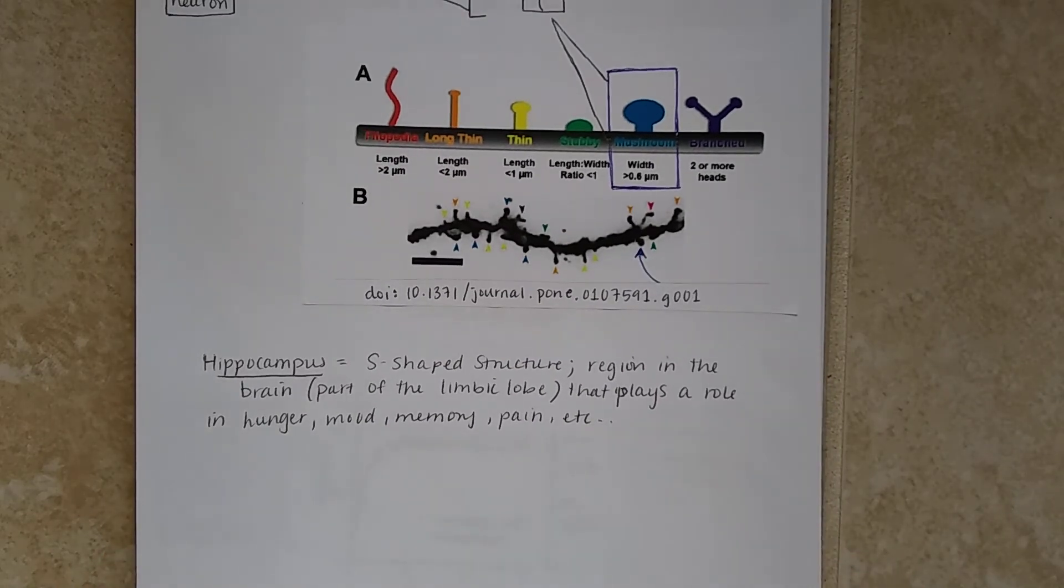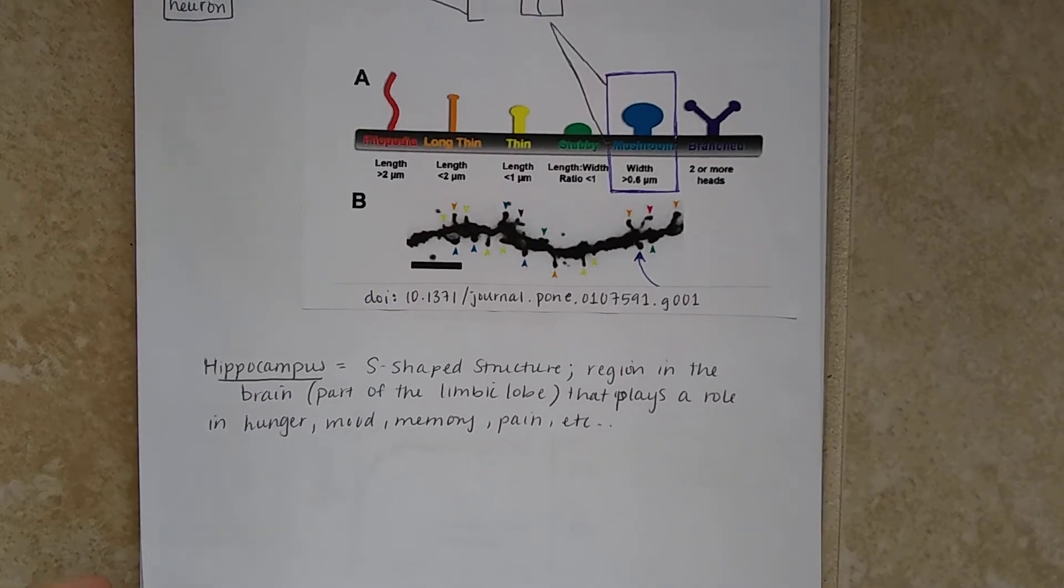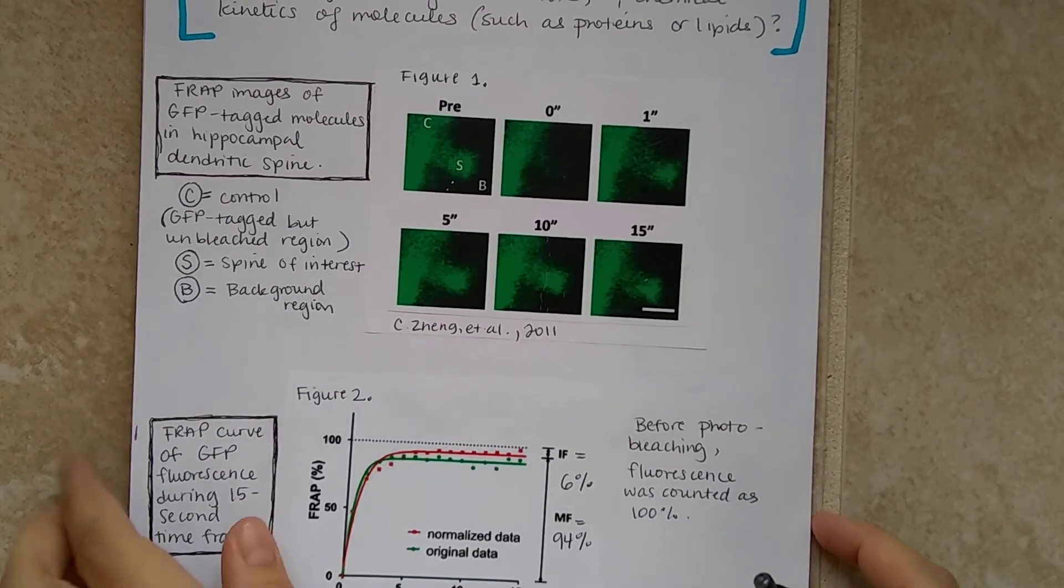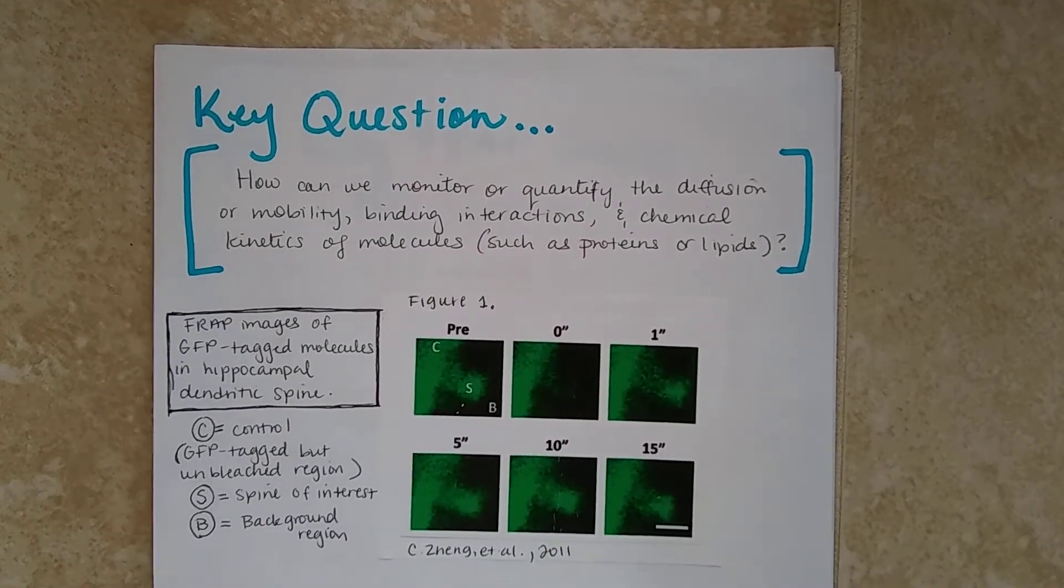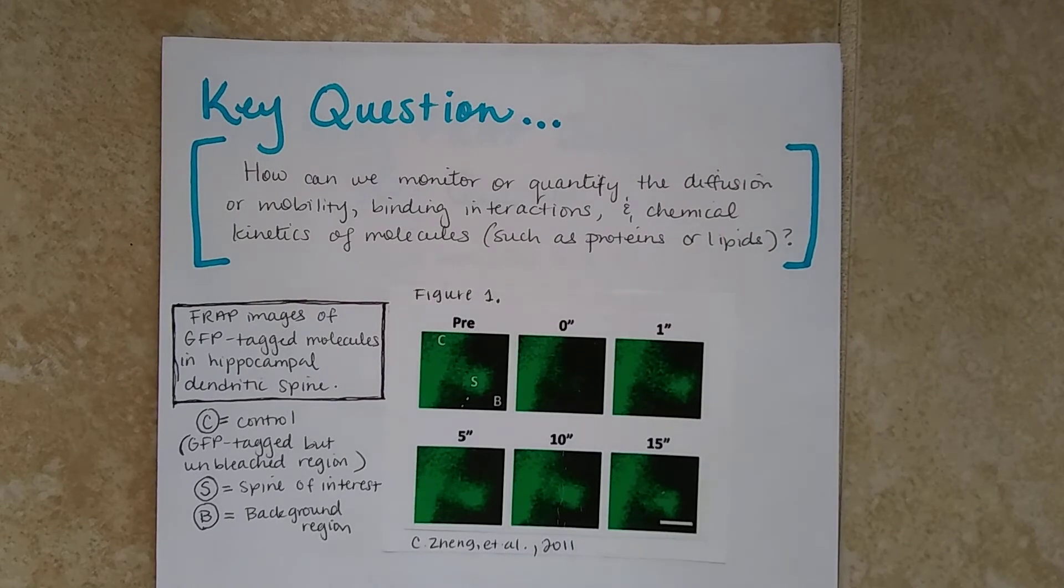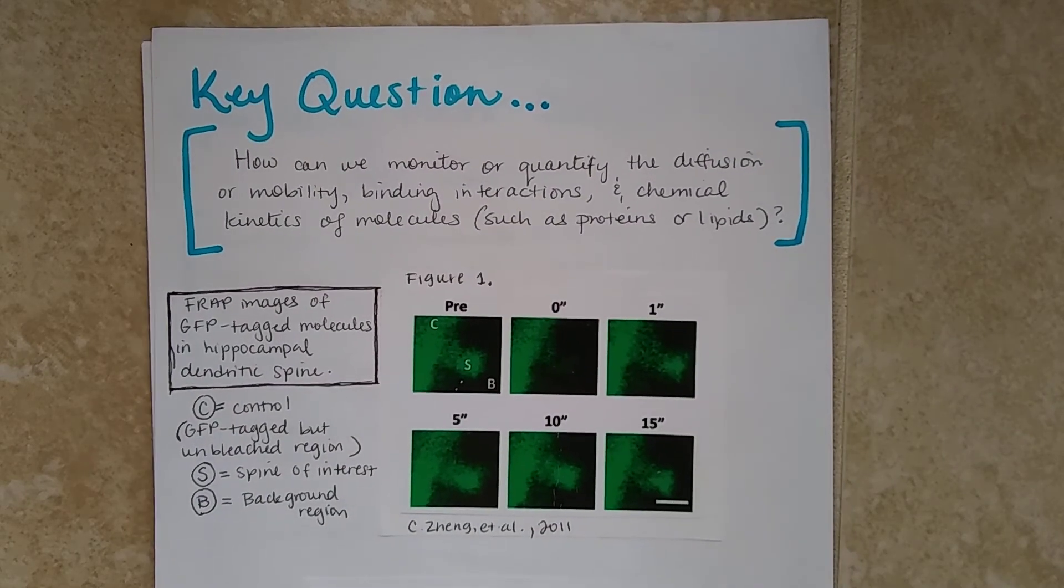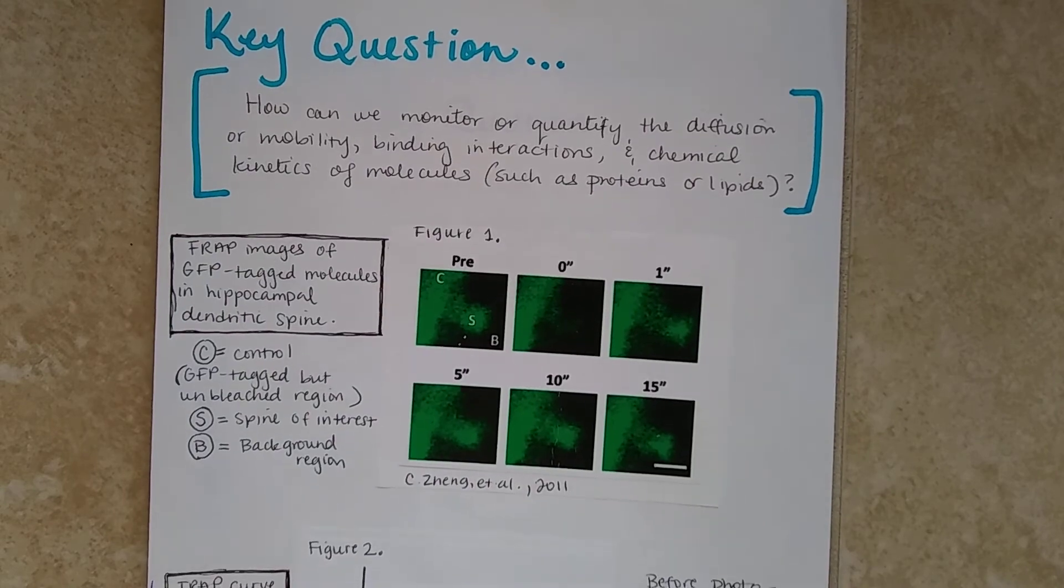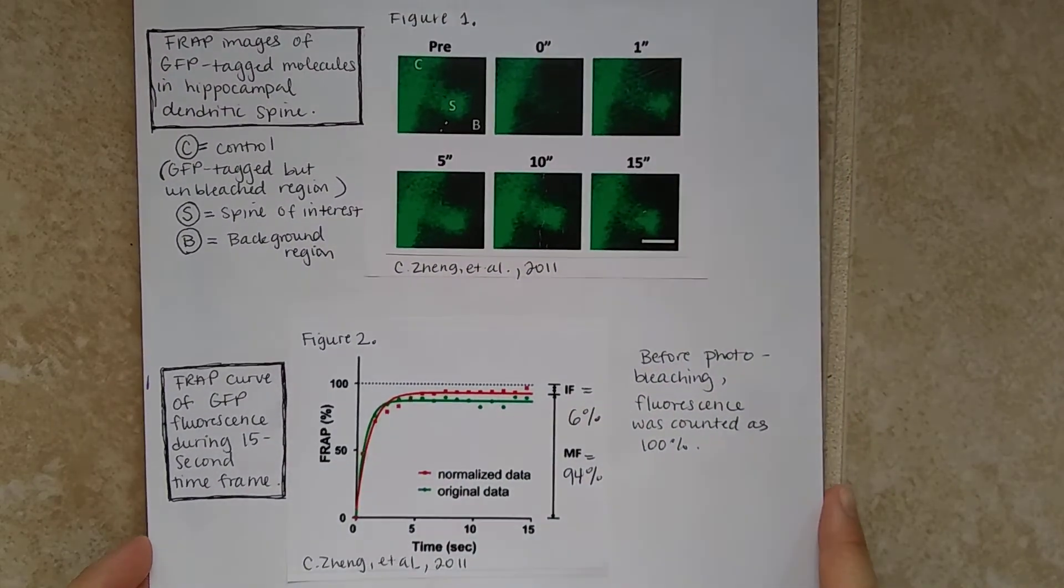And the hippocampus is an S-shaped structure and it's a region in the brain, part of the limbic lobe. And it plays a role in hunger, mood, memory, pain, and many more other roles. So a key question that we're trying to get answered is, how can we monitor, quantify the diffusion or mobility, even binding interactions and chemical kinetics of molecules such as proteins or lipids?